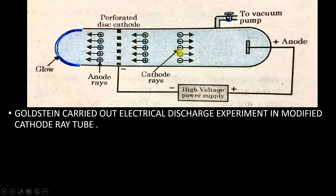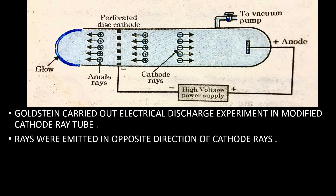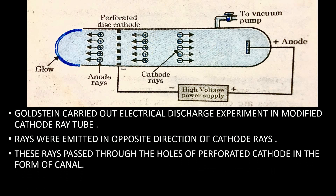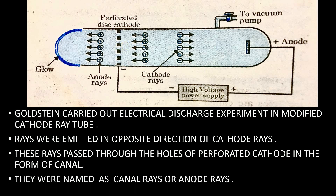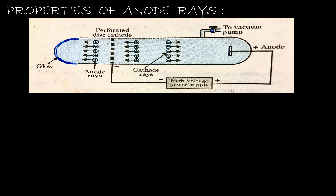Cathode rays are emitted by the cathode. But further, Goldstein observed that there were certain rays emitted in the opposite direction of cathode rays. Cathode rays travel from cathode to anode — that is, from left to right — but Goldstein observed rays traveling from right to left. These rays pass through the holes in the perforated cathode in the form of canals, and therefore they were named canal rays or anode rays.